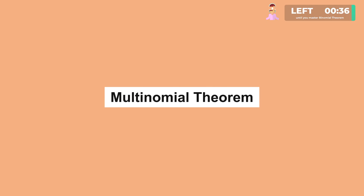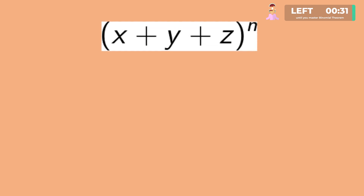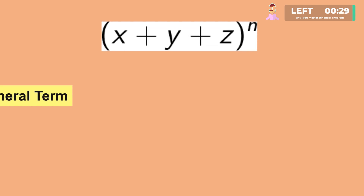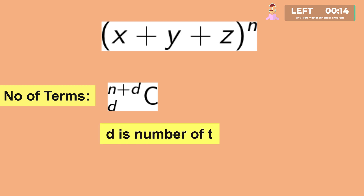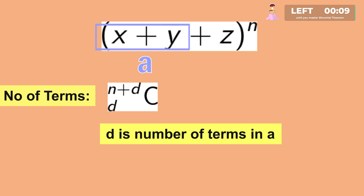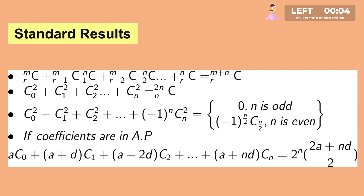Multinomial theorem: to find the expansion of (x plus y plus z) to the power n, the general term equals n factorial upon (p factorial into q factorial into r factorial) into x to the power p times y to the power q times z to the power r, where p plus q plus r equals n. The number of terms is given by (n plus d)Cd, where d is the number of variables. Some standard results are given here — pause the video and review them.